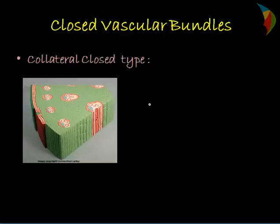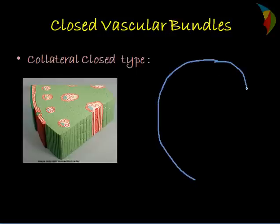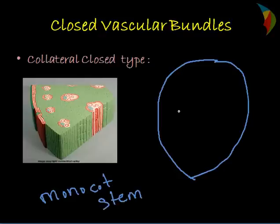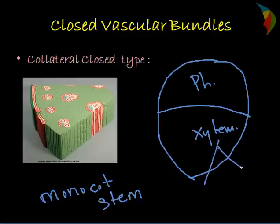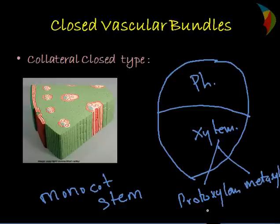Now we can see the collateral closed type of vascular bundle. In the closed type, there is no presence of a cambium layer. This is mostly found in monocots — it is a typical characteristic of a monocot stem. Here you don't have a cambium layer; this is phloem and this is xylem. The xylem is further divided into proto-xylem and meta-xylem, which we will discuss further. This is a typical example of the collateral closed type.